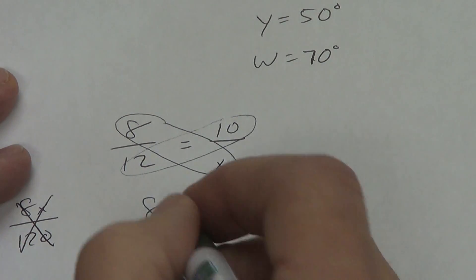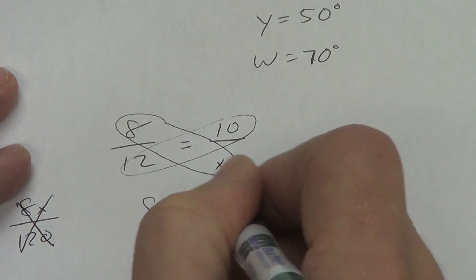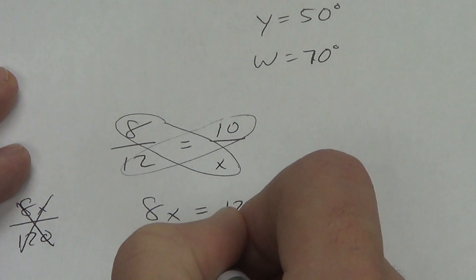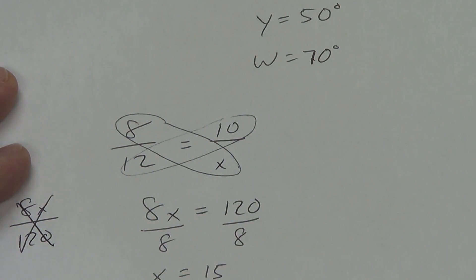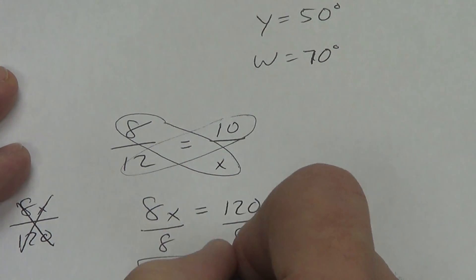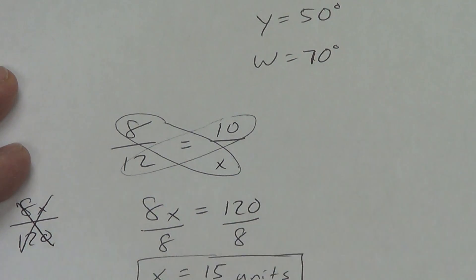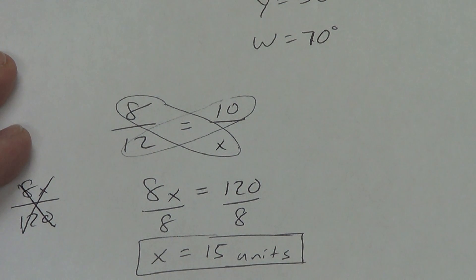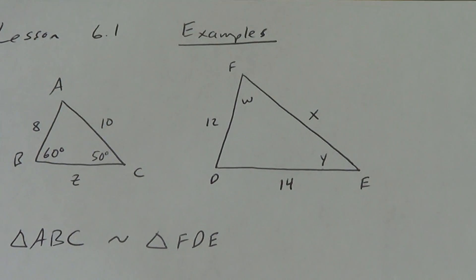8X equals 120 divided by 8. Use your calculator if you absolutely need to. But we get 15. Remember, we're getting in the habit of doing labels. So, 15 units. Later on, it's going to be feet and inches and meters and yards and things like that.